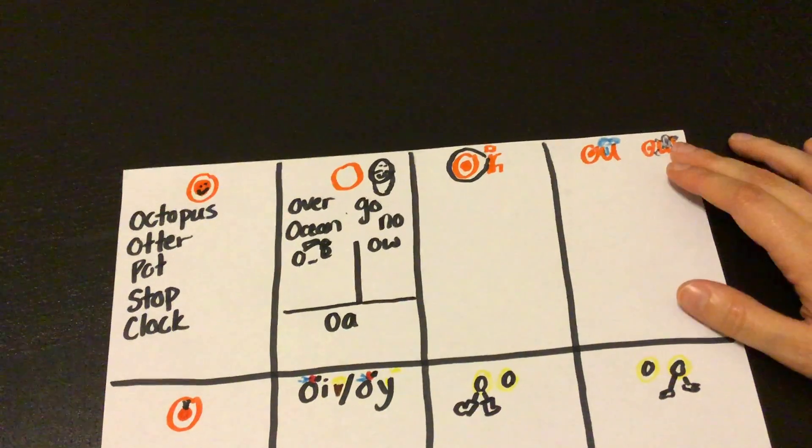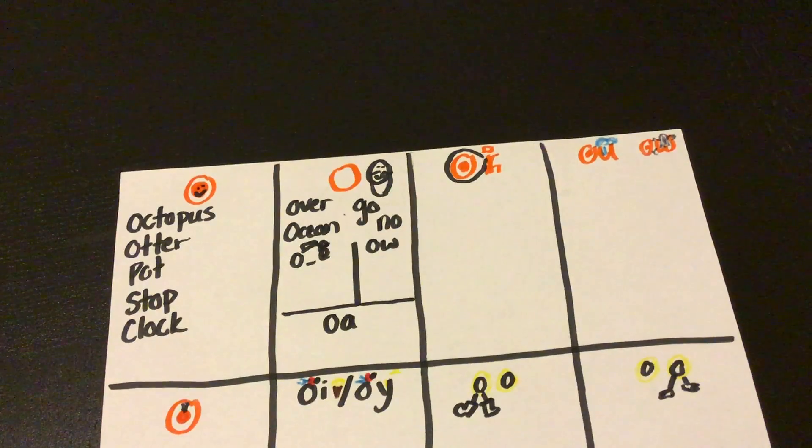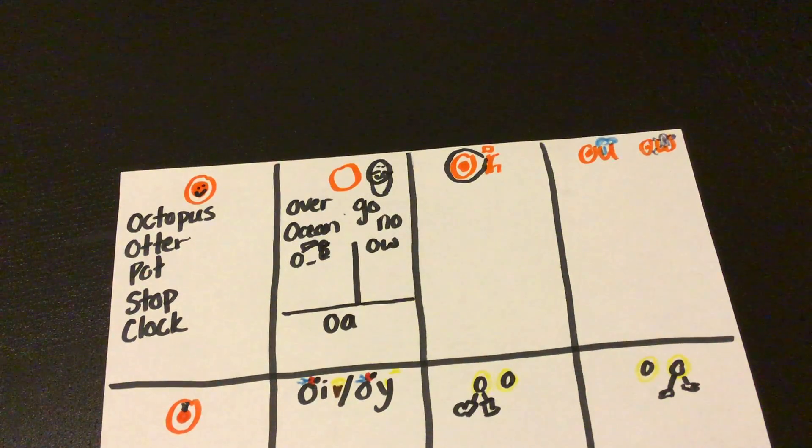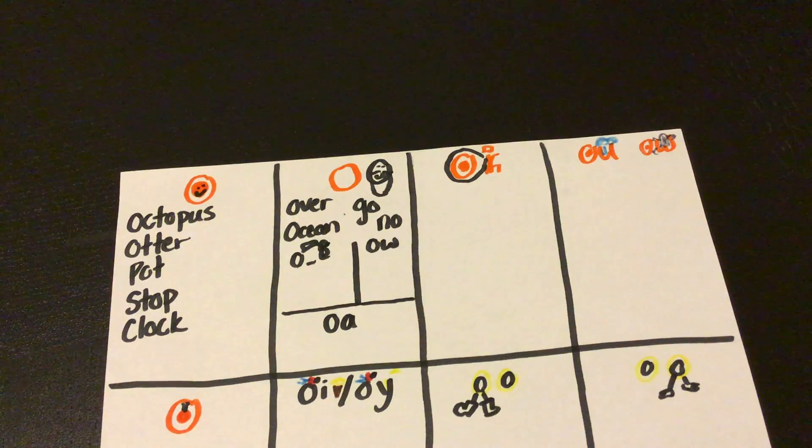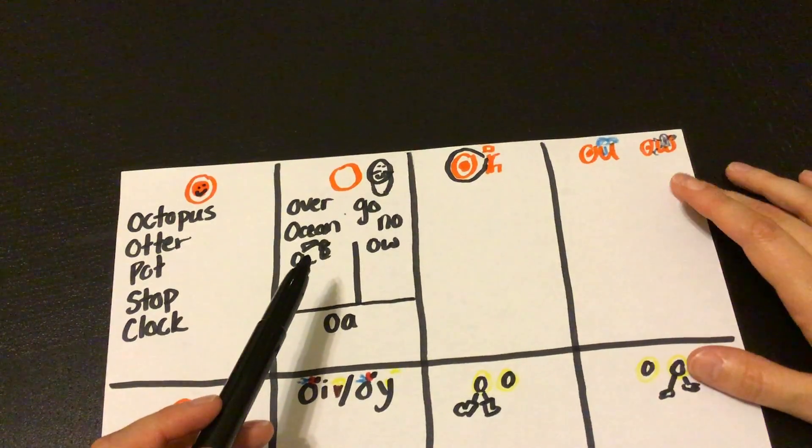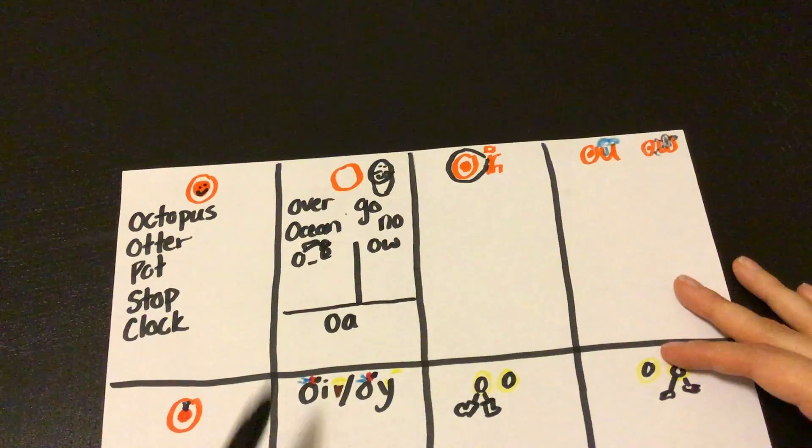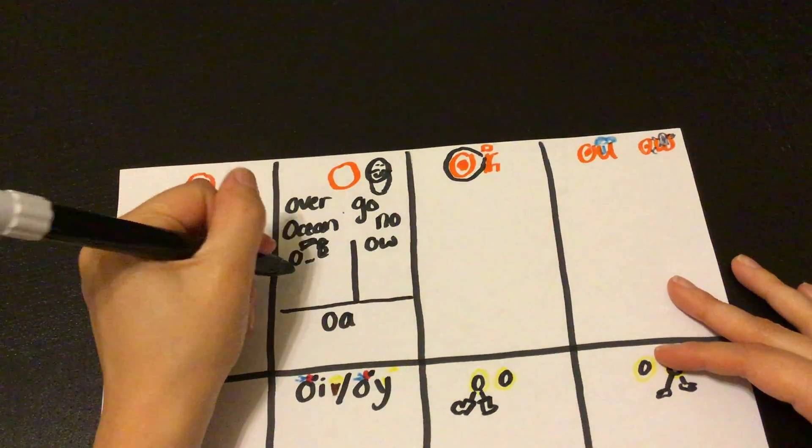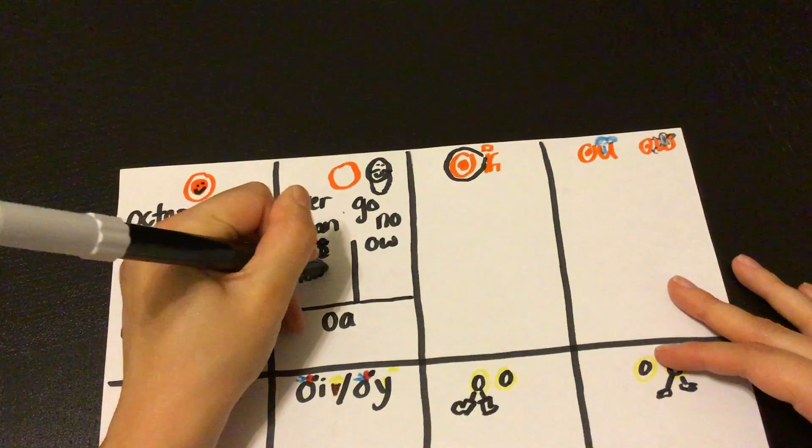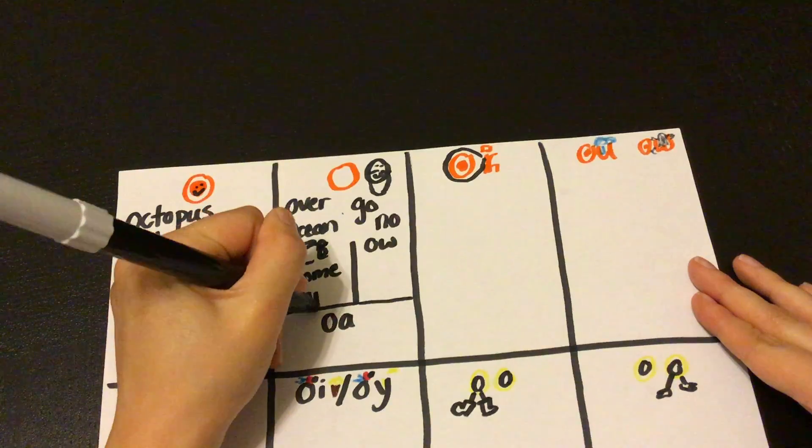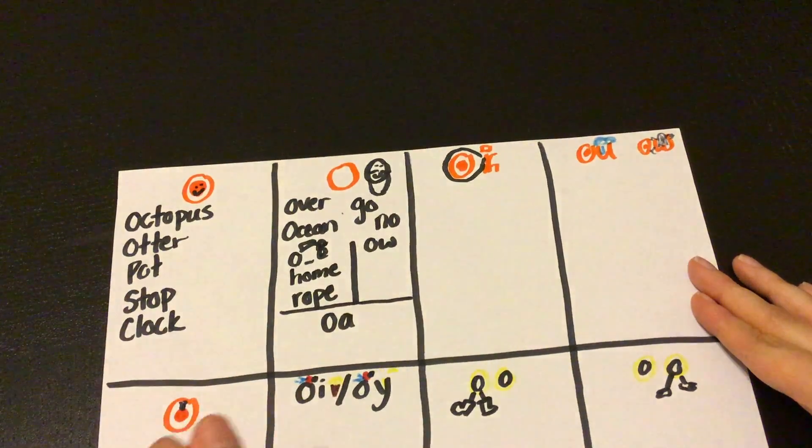Now O-W shows up again over here. It can make two different sounds. I don't know why, it just can. So if you see an O and a W together, try both. Try Mr. O sound and try the ow sound, because it'll be one or the other. Okay, so O magic E words, we have words like home and rope.